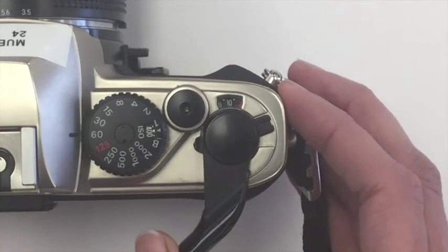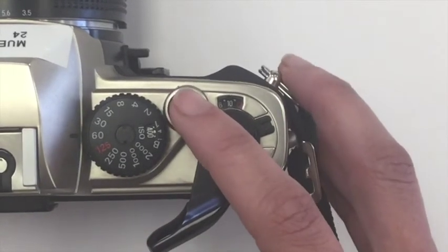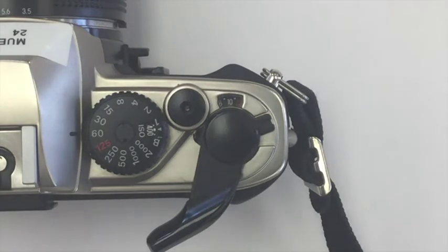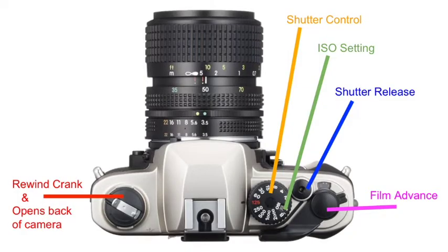If you're no longer able to advance or take a picture, that means you are done with your roll of film. From there, you will be able to properly rewind your film. The last part on the top of the camera body is the counter, which tells you how many pictures you have taken.